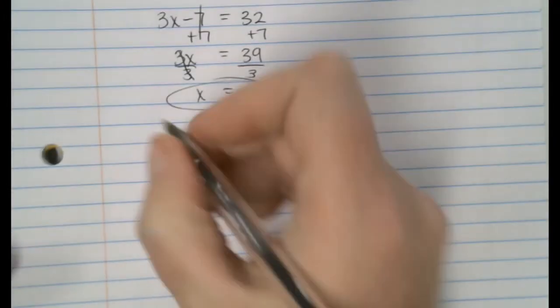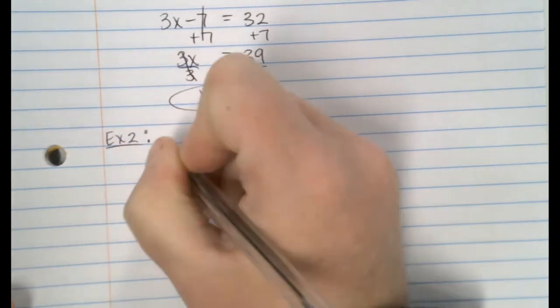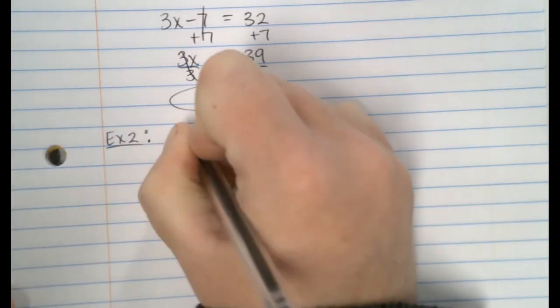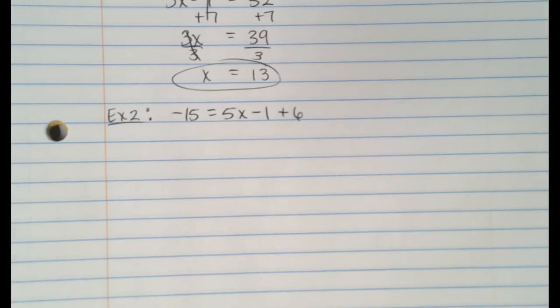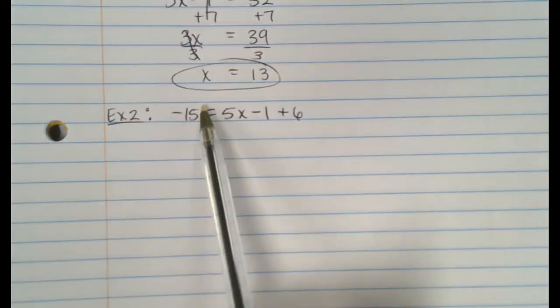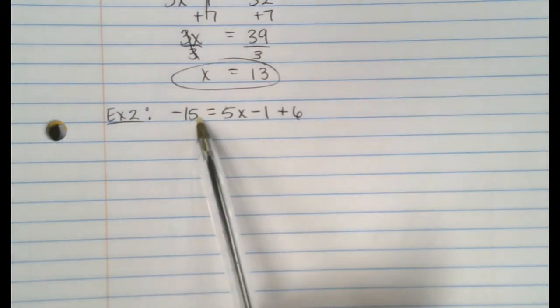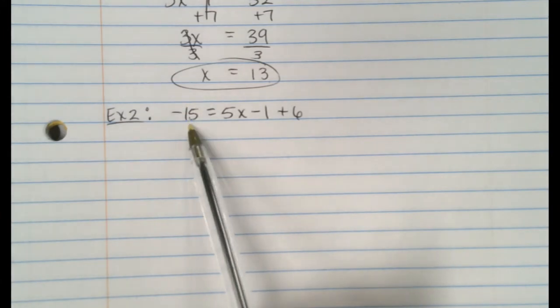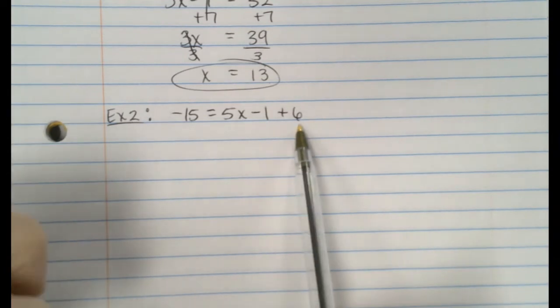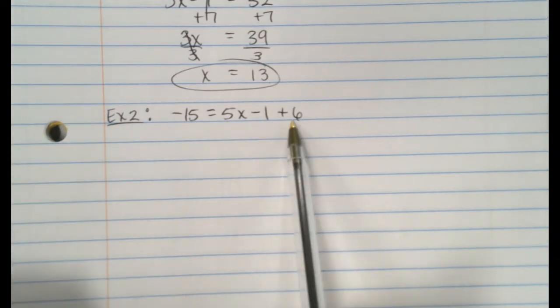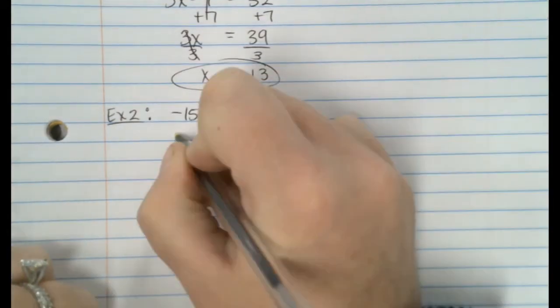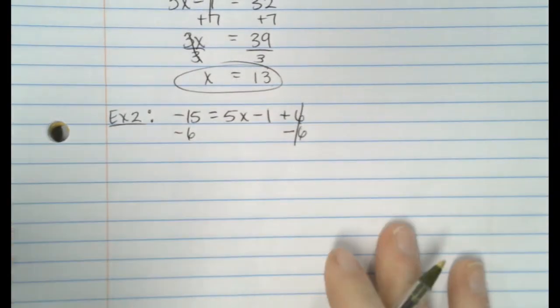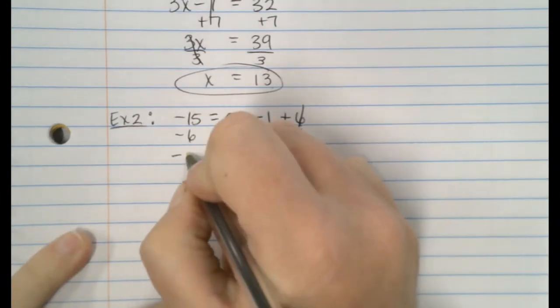Let's do another one. Make it look a little bit different. How about this one. Negative 15 equals 5x minus 1 plus 6. Now, remember something that we talked about. Is anything that's on the other side of the equal sign from x? Leave it alone. Stay away from it. So, stay away from the negative 15. This, this, and this have got to go. The 5, the minus 1, and the plus 6. Now, which one's furthest from x? Plus 6. How do we get rid of plus 6? Minus 6. 6 minus 6 cancels out. They make 0. Negative 15 minus 6 is negative 21.